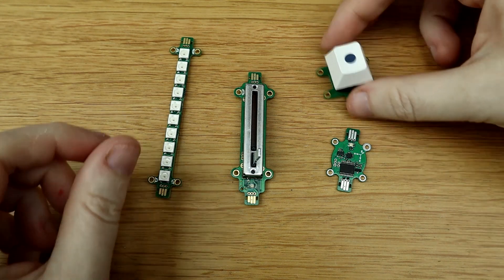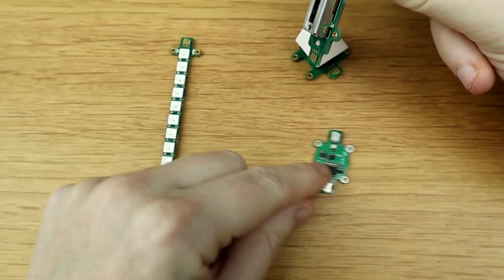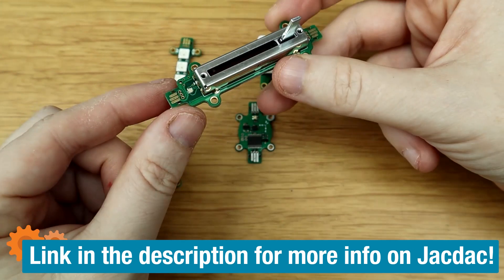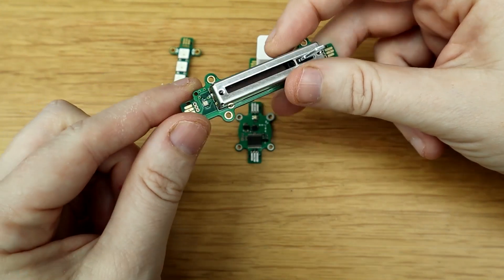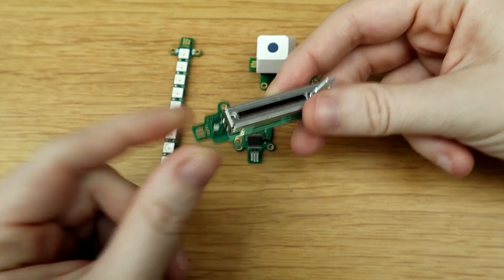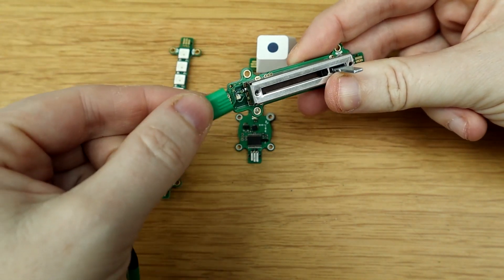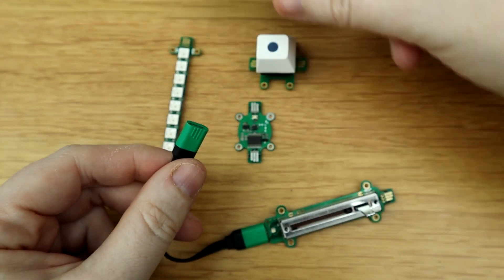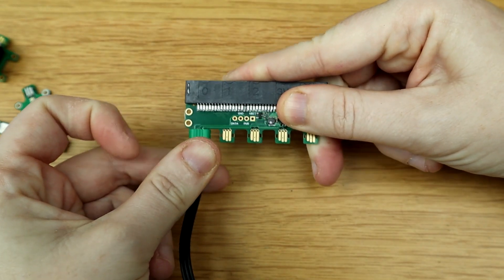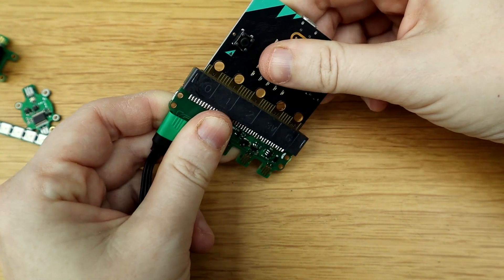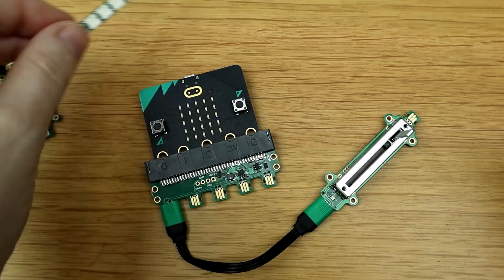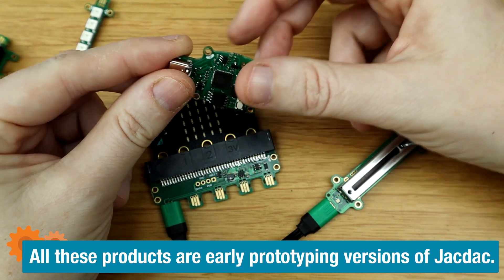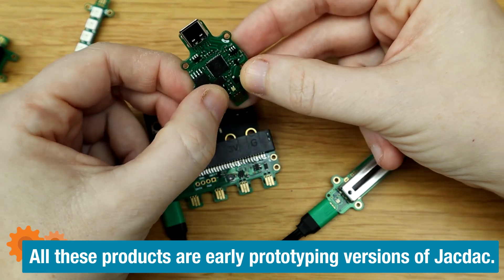Here are some Jackdac modules then. So this is a button and we've got a slider here. This is an accelerometer and then you've got your Neopixel strip. So you can see these have a Jackdac connector on either end so they can be chainable. So you've got your Jackdac cable. This one's green and you just plug it in there and then onto your board. Here's an RP2040 chip made onto a Jackdac board. It's got a USB-C connector and you've got like the boot and reset buttons there.